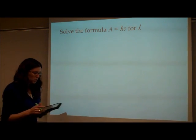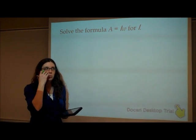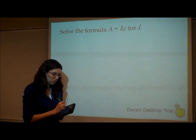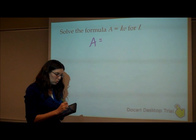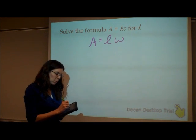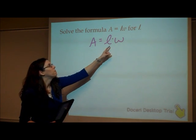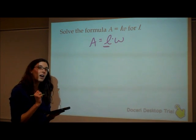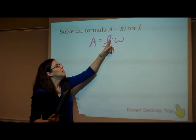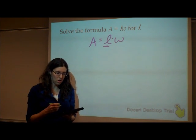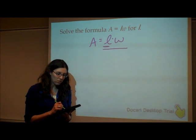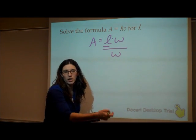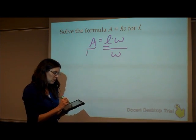So how you're going to do this is think back to when we were solving equations. It's the same thing, only now we're just using all letters. So A equals length times width. Now, these are being multiplied. I want to get the L by itself. Since it is being multiplied by W, I want to divide that by W.